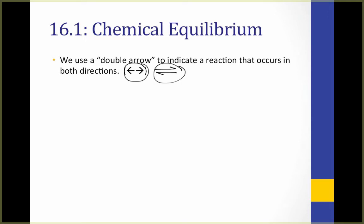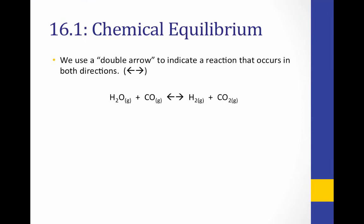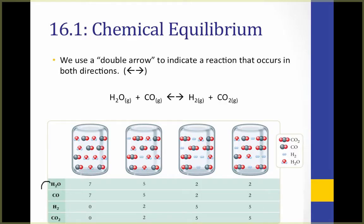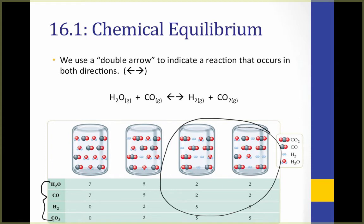Let's look at another example. This reaction tells us that 1 mol of H2O plus 1 mol of CO will yield 1 mol of H2 and 1 mol of CO2 — that's the forward reaction. Because of the double arrow, we see that this reaction establishes equilibrium, because eventually the rate of the forward reaction will equal the rate of the reverse reaction. Looking at this particle diagram, notice the amounts of each particle are listed in the table below. The reaction reaches equilibrium at these two flasks, where the amount of reactant and product becomes constant.